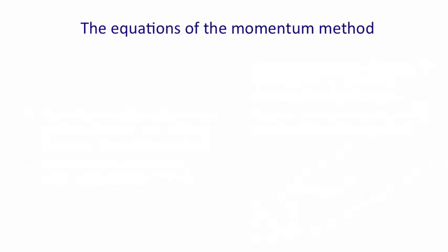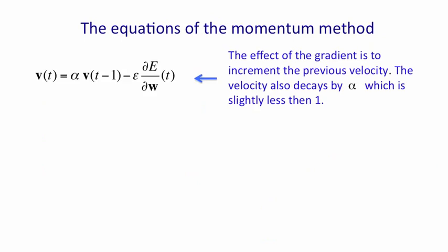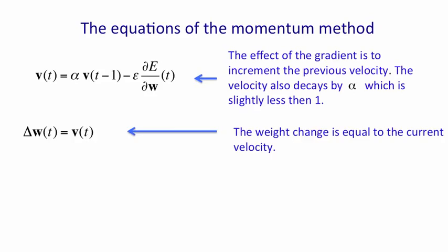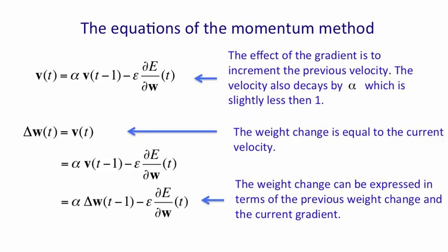The equations of the momentum method are fairly simple. We say that the velocity vector at time t is just the velocity vector at time t minus 1. Time here is the updates of the weights. So it's the velocity vector that we got after mini-batch t minus 1, attenuated a bit. We multiply by some number like 0.9, which is really viscosity, or it's related to viscosity. But unfortunately, I called it momentum. So we now call alpha momentum. And then we add in the effect of the current gradient, which is to make us go downhill by some learning rate times the gradient that we have at time t. And that'll be our new velocity at time t. We then make our weight change at time t equal to the velocity. That velocity can actually be expressed in terms of previous weight changes, as is shown on the slide here. And I'll leave it to you to follow the math.